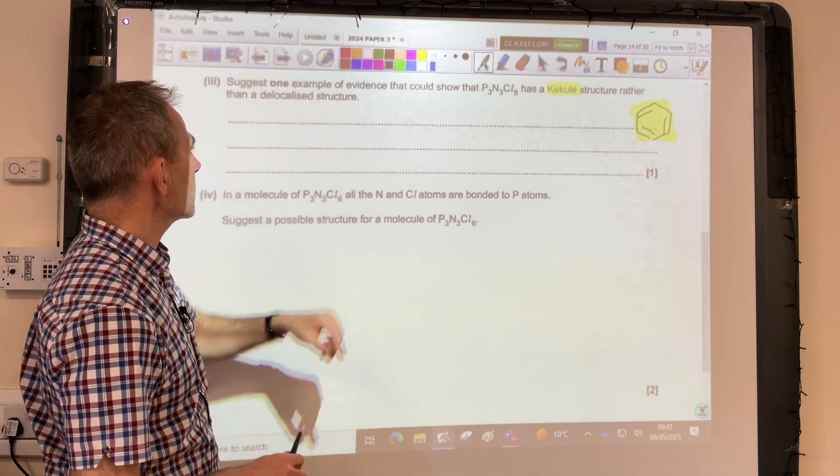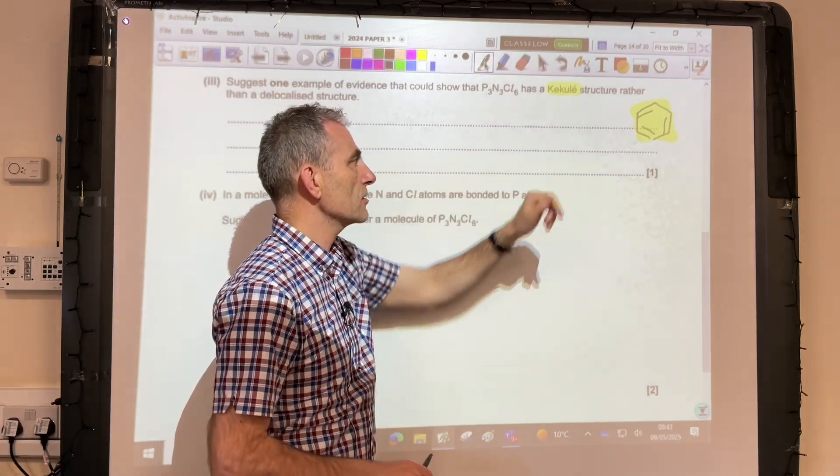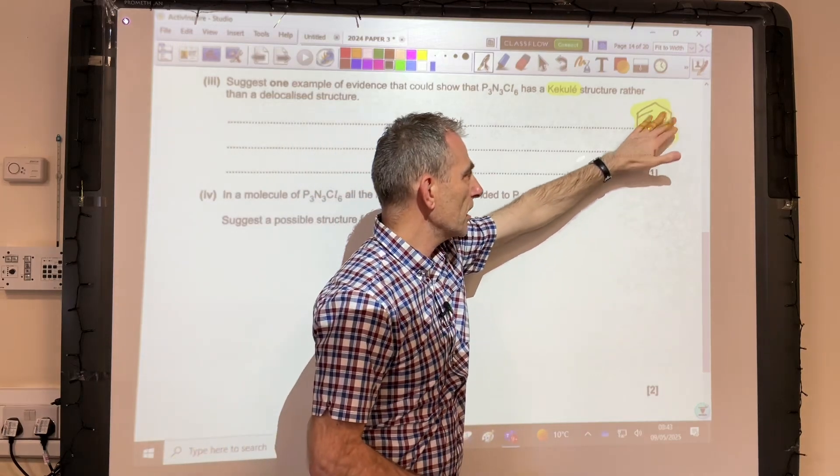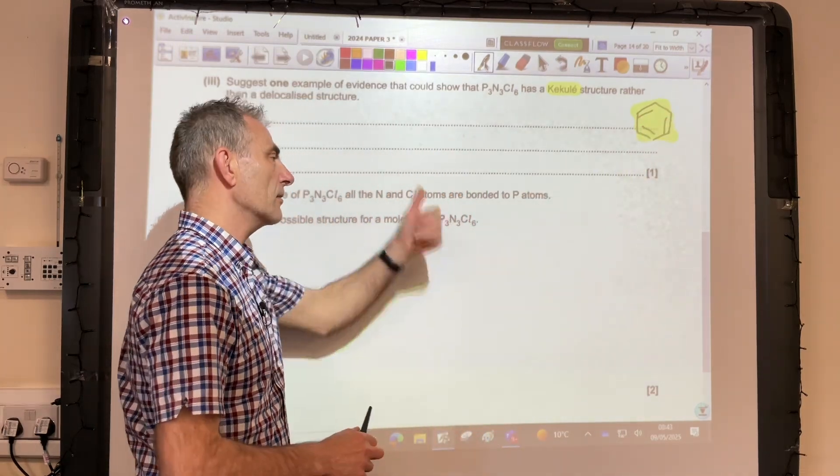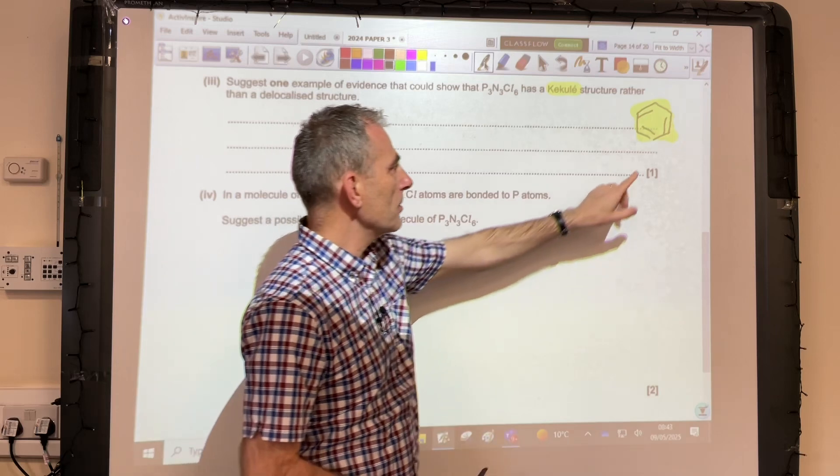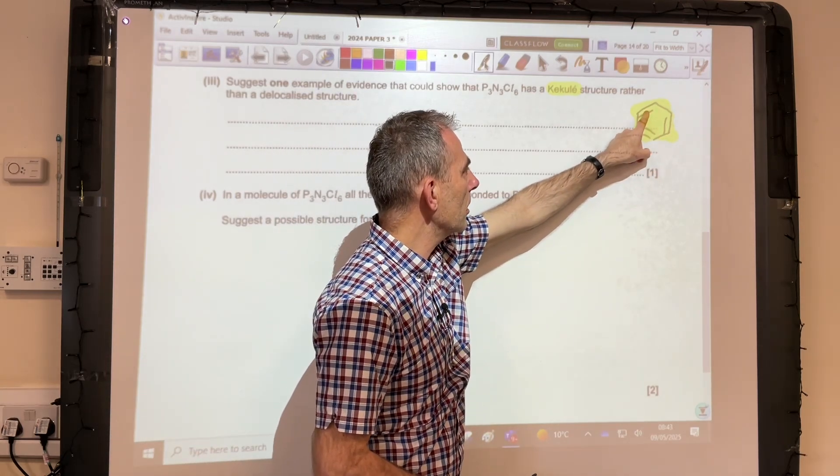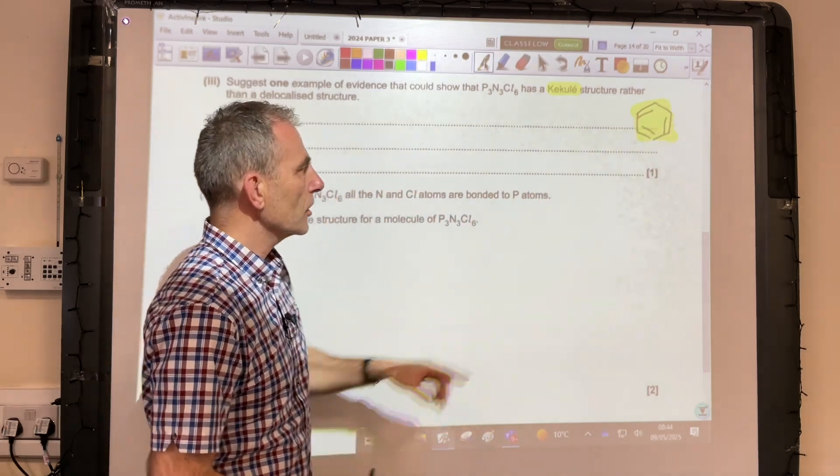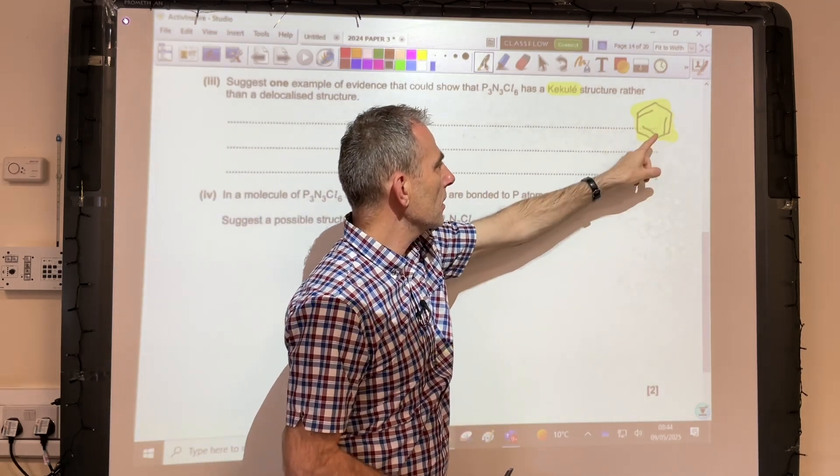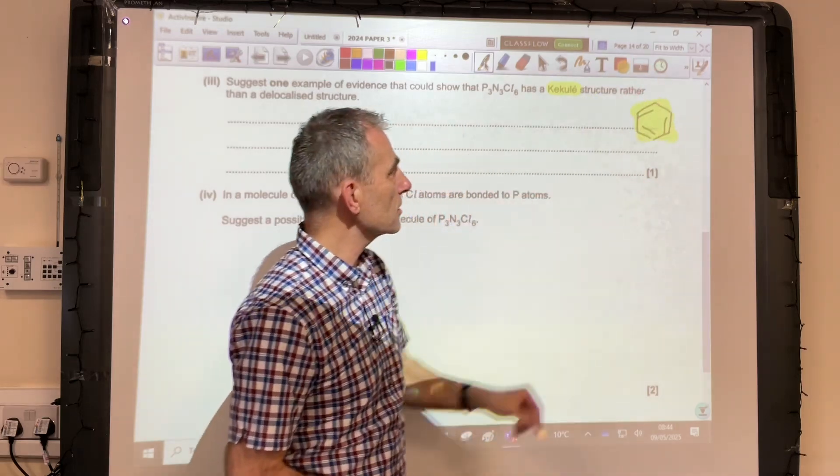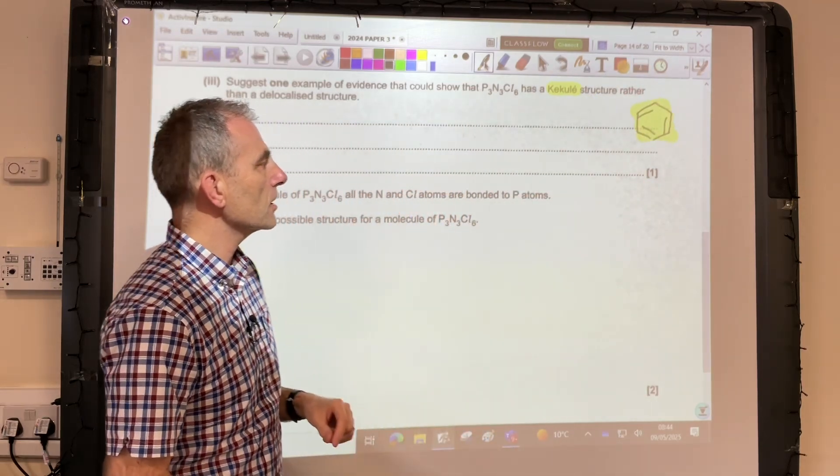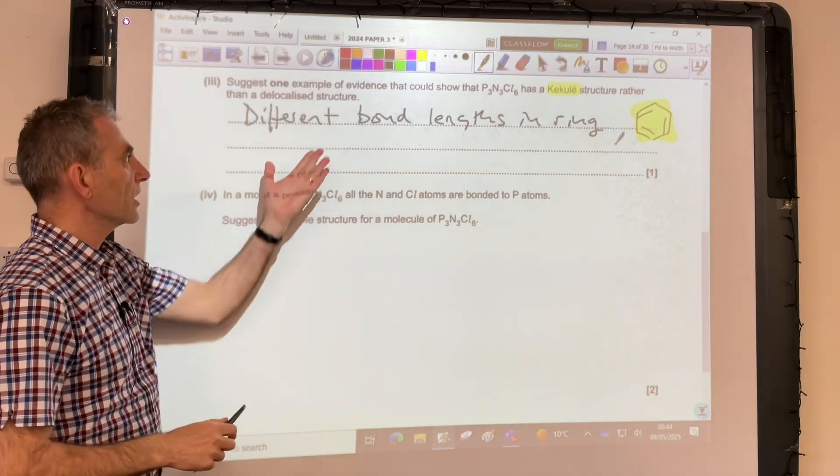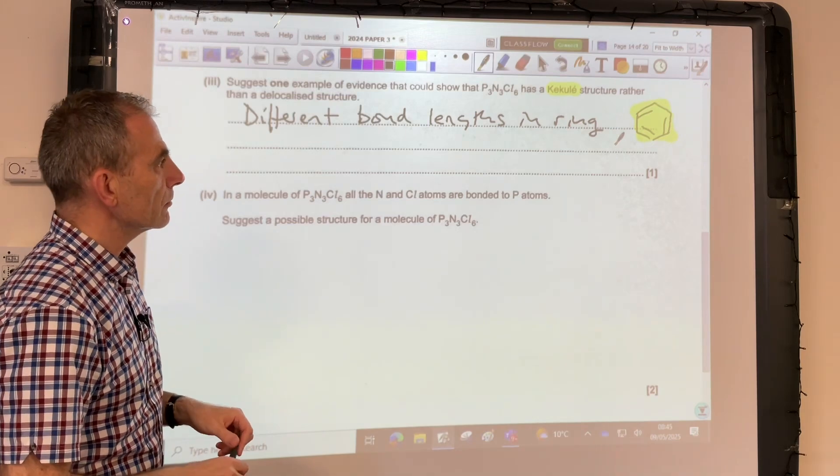Next part, so I'll suggest an example of evidence that would show that this has a Kekulé structure rather than a delocalised structure. So just kind of testing your knowledge of your benzene chemistry really and applying it to this. So remember, Kekulé suggested this alternating carbon-carbon double, carbon-carbon single bonded, six-membered ring. So if that was correct, then the carbon-carbon bond lengths would be different because the double bond is slightly shorter than the single bond. So you could use that as your answer. So all you would need to see there is there are different bond lengths in the ring.